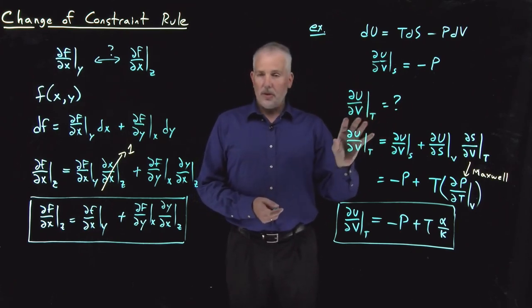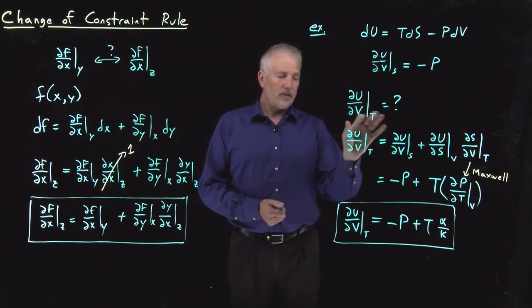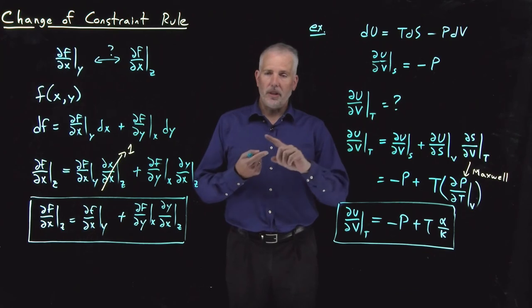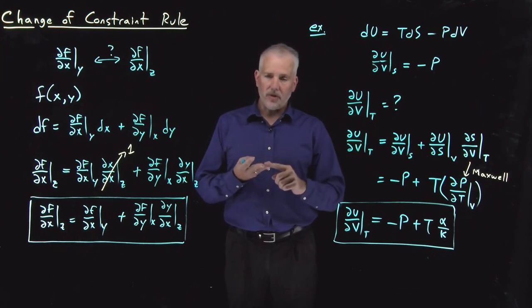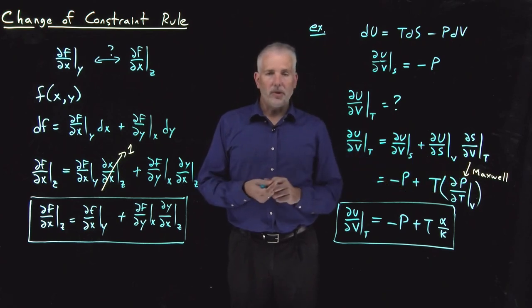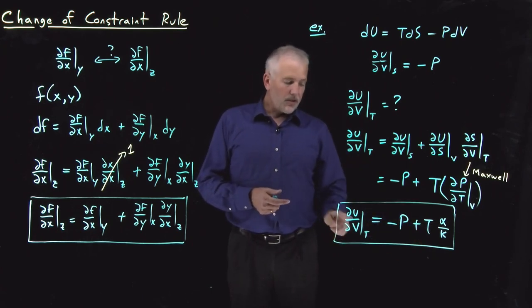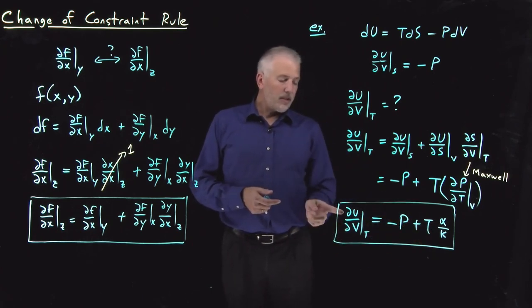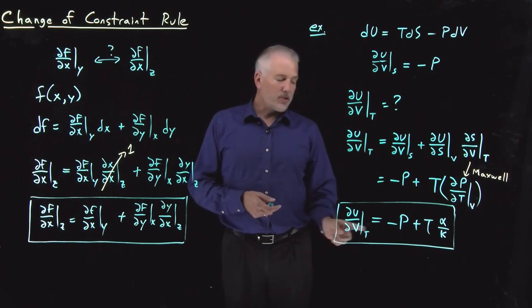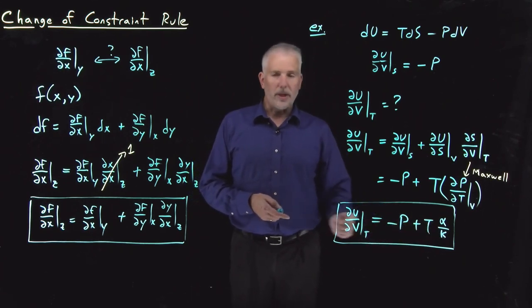We can use the partial derivative identities that we've talked about up to this point, the reciprocal rule, the chain rule, the cyclic rule, the change of constraint rule, along with things like the Maxwell relations and the named quantities like alpha over kappa. If we combine all those rules in the right ways, we can discover these identities that relate these thermodynamic relationships to things that we're already perfectly comfortable with, named quantities and basic thermodynamic variables.